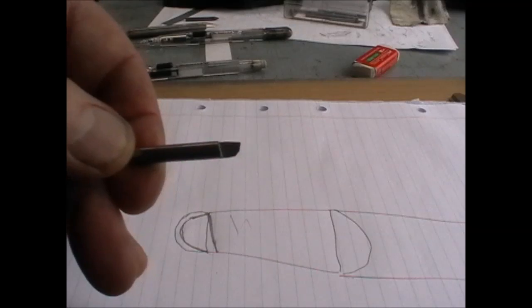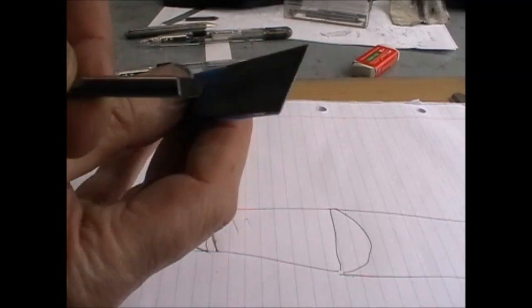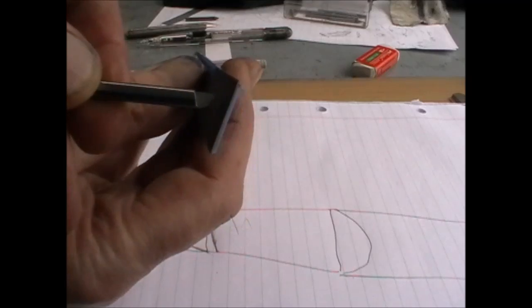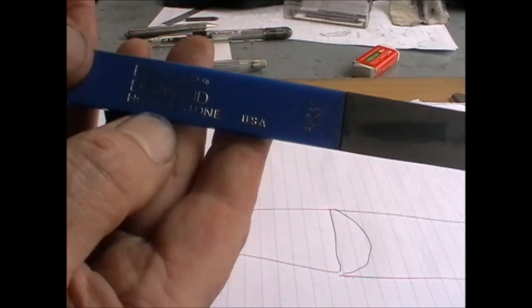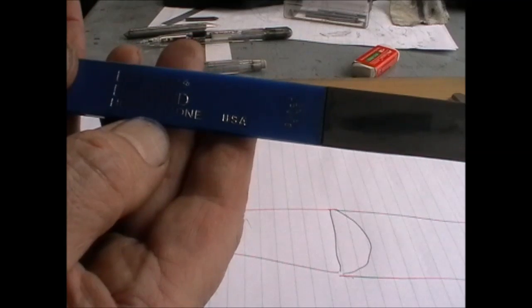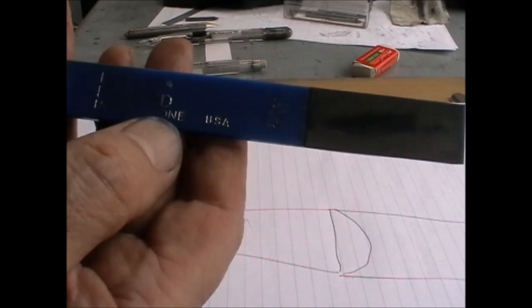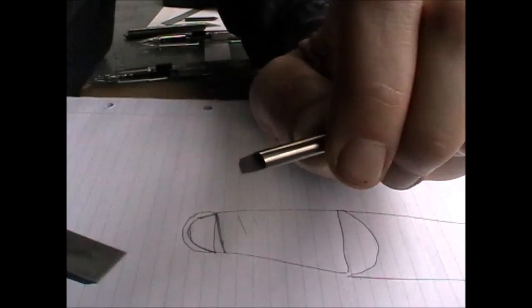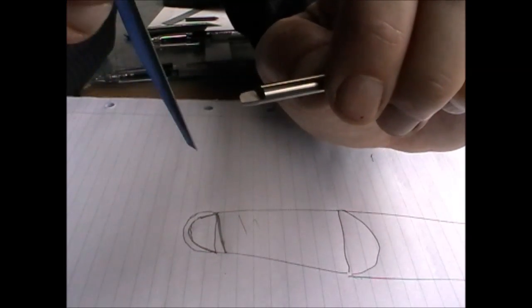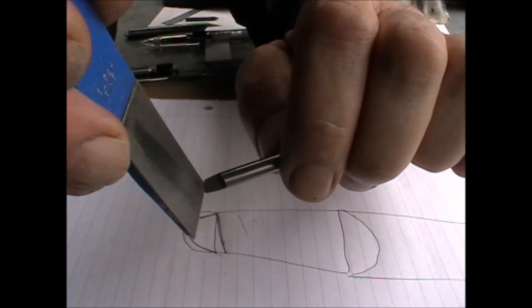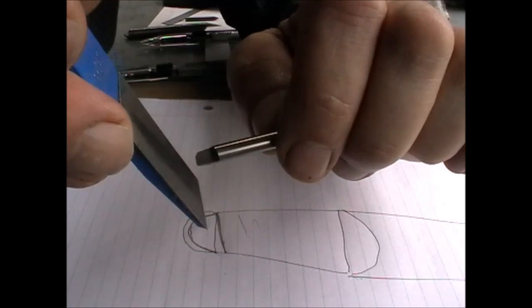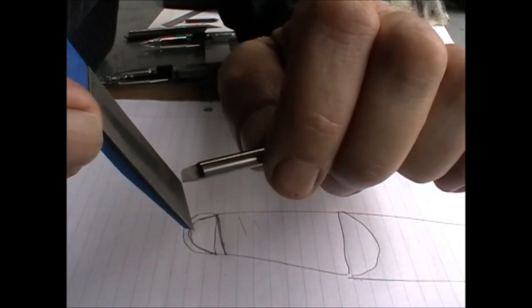You can hone that end with a diamond lapping stone, for example this one which is super fine, the blue one is very good. You hold it up with a little bit of clearance underneath and a little bit of clearance back that way, just a few degrees or you end up with a really fragile point.